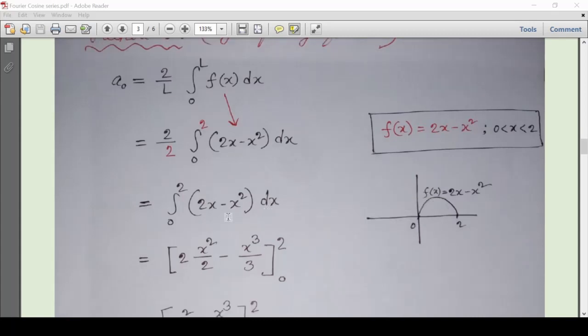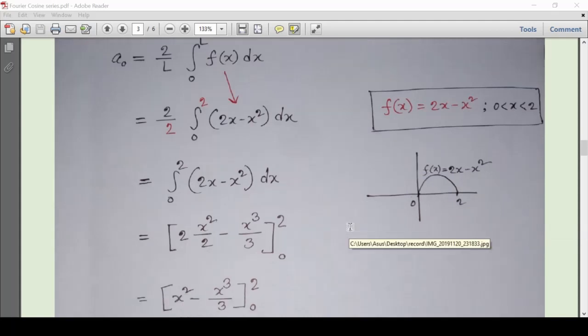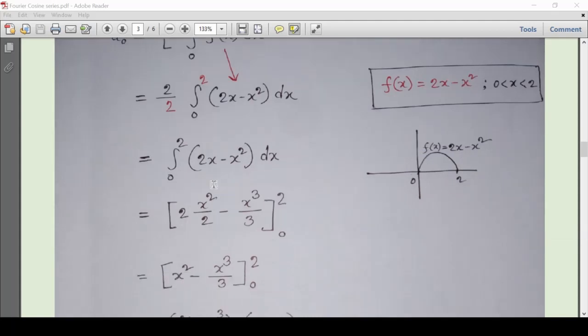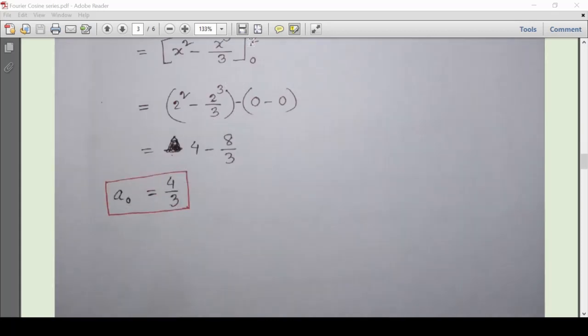If we input the value of L here, we obtain 2/2 times the integral from 0 to 2 of 2x - x² dx. From 0 to 2, the function is defined to be 2x - x². By simple integration, we are getting the result of a_0 that is exactly equal to 4/3.